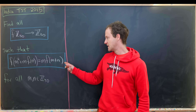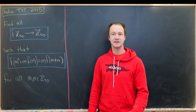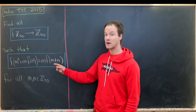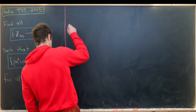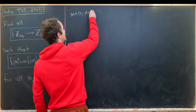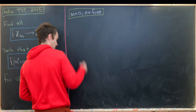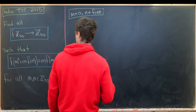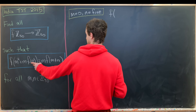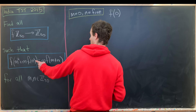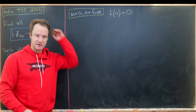Looking at this, the fact that we've got a multiplier of m to the entire right-hand side motivates us to set m equal to zero, because that'll zero out the right-hand side. So setting m = 0 with n free, we have f(0² + 0·f(n)) = 0·f(n), which gives us f(0) must be equal to zero.